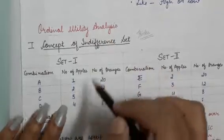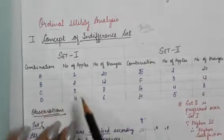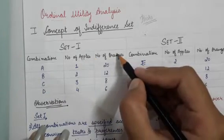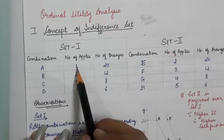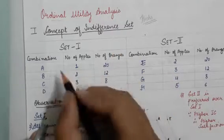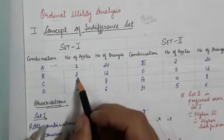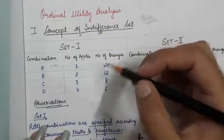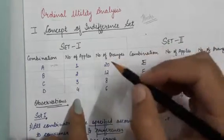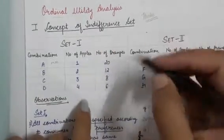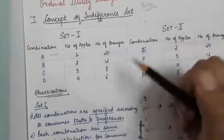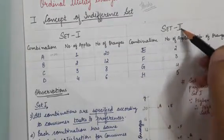The next concept is the indifference set. I have taken Set 1 with combinations A, B, C, D, involving two goods: apples and oranges. The combinations are: A = 1 apple + 20 oranges, B = 2 + 12, C = 3 + 8, D = 4 + 6. The consumer is equally satisfied with all these combinations — satisfaction does not differ across A, B, C, or D.